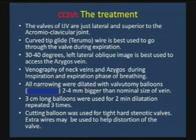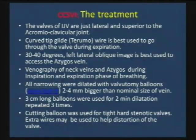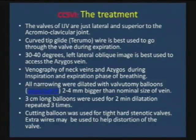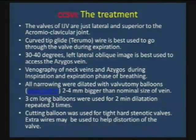Here are some tips for interventional radiologists just starting to do this. The valves of the internal jugular vein lie just lateral and superior to the acromioclavicular joint. The curved-tip glide wire, especially Terumo, is best to navigate through the valve, and it's best done during expiration — at the end of expiration the valve opens, and that's where you find the opening to go through with the curved-tipped wire. The best catheter we found was the vertebral catheter, 100 cm, which is usually the best to navigate into the opening of the internal jugular veins.